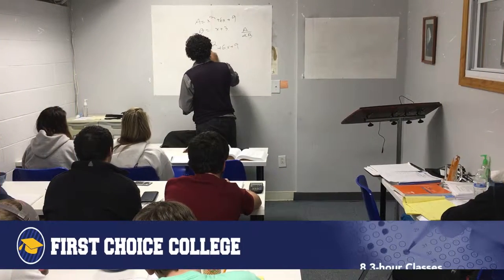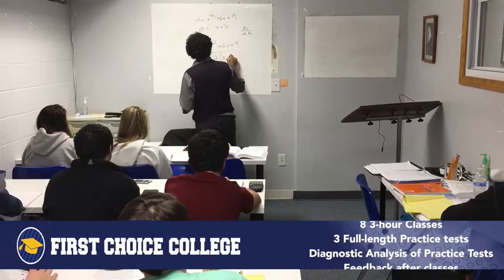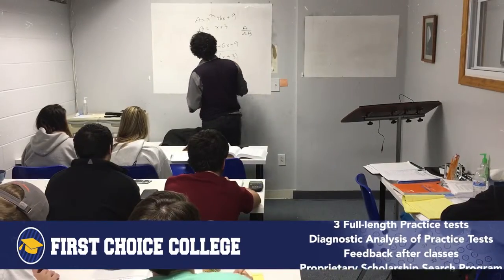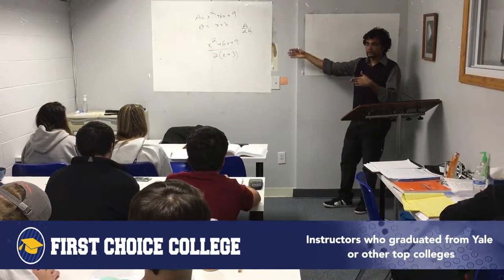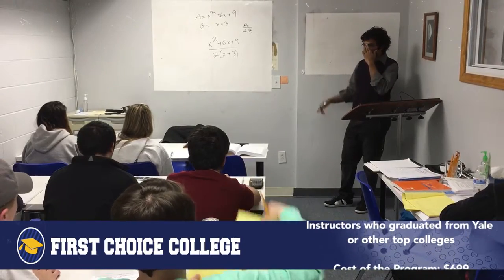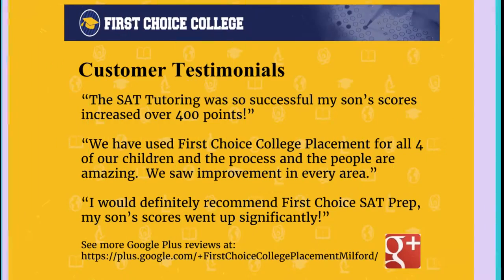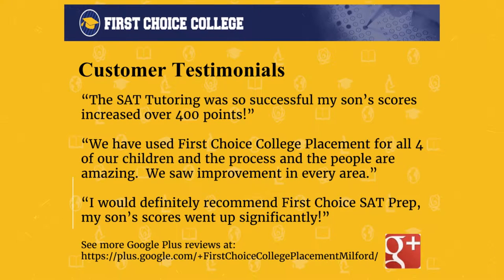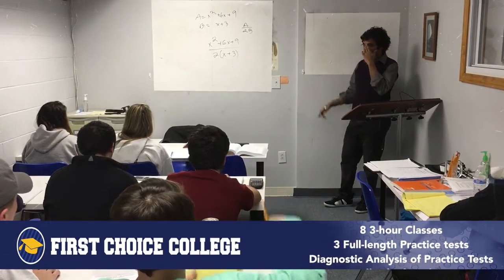x plus 9 divided by 2 times x plus 3. You just substitute the values of a and b. Now what should we do? Anybody care to make a guess?